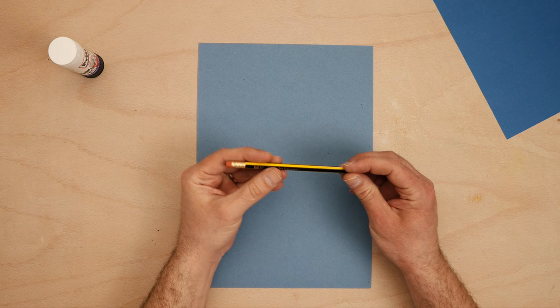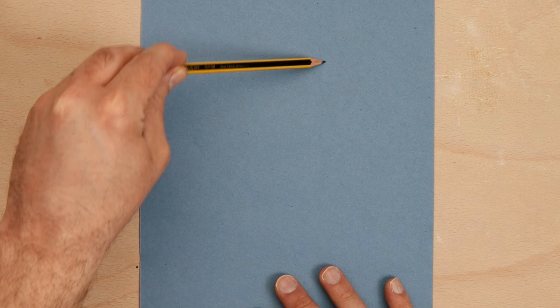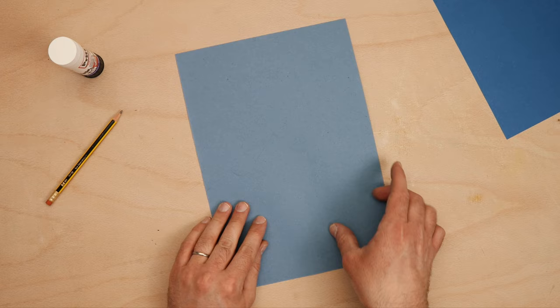Grab your light blue paper and pencil. This will be our mountain in the distance. Hold the end of your pencil and lift your elbow into the air. About halfway up your light blue paper, draw a wonky line from one side to the other.